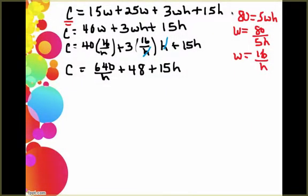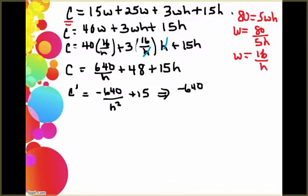Now that we have our cost equation, we're ready to go ahead and take our derivative and find our critical points. So c prime is going to be negative 640 over h squared plus 15. But I'm going to go ahead and combine that into one fraction and get negative 640 plus 15h squared all over h squared.